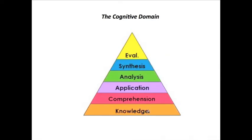We start with knowledge and move to comprehension. Knowledge is simply being able to regurgitate or state a fact. Comprehension means we actually understand what we're saying. Application means we can apply it. Analysis means we can tear it apart and analyze it. Synthesis means that after we tear it apart, we can put it back together. And then the highest stage is that of evaluation.